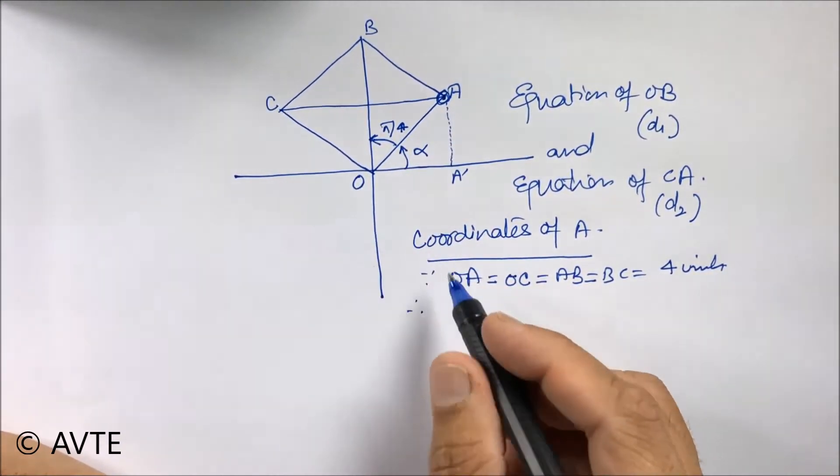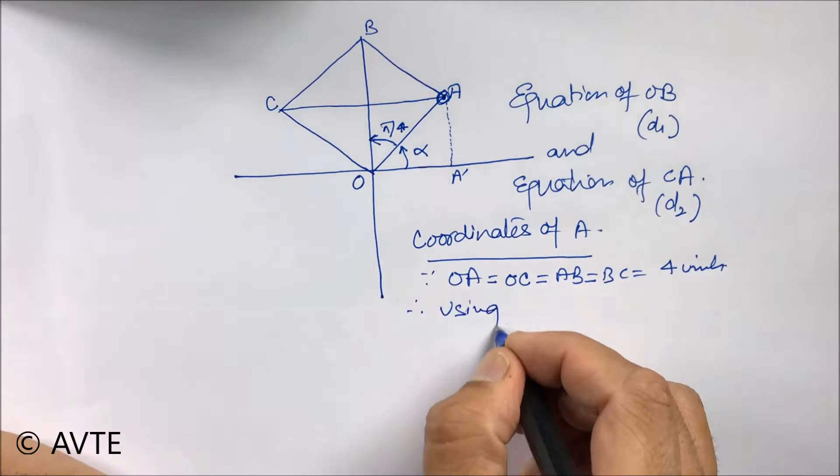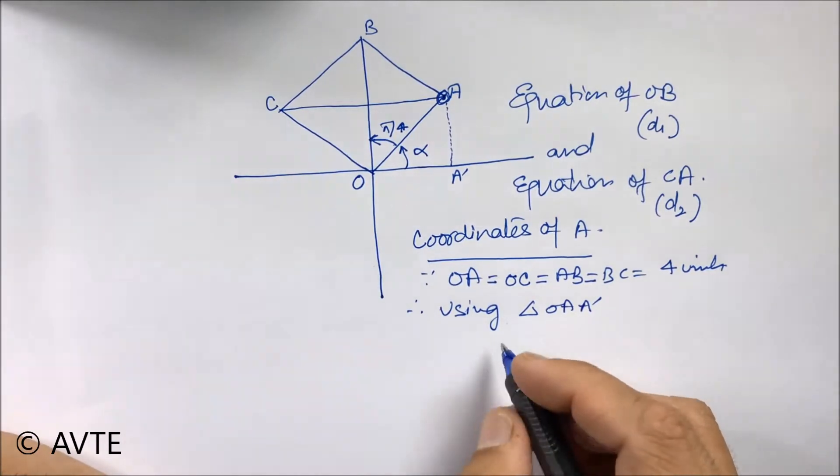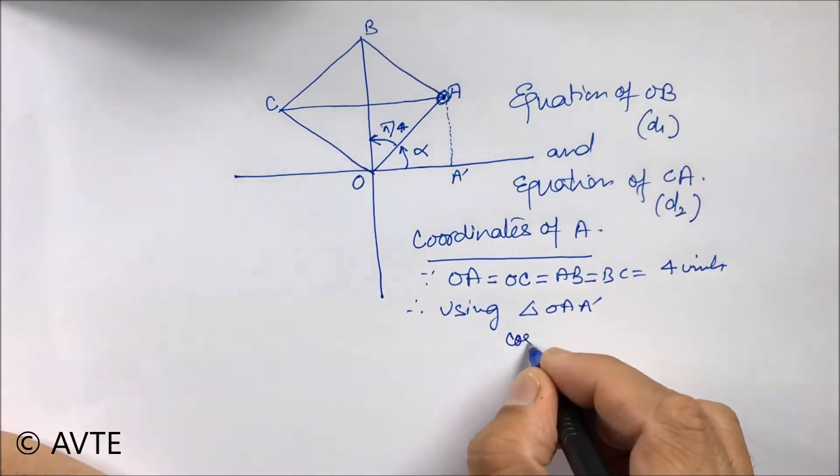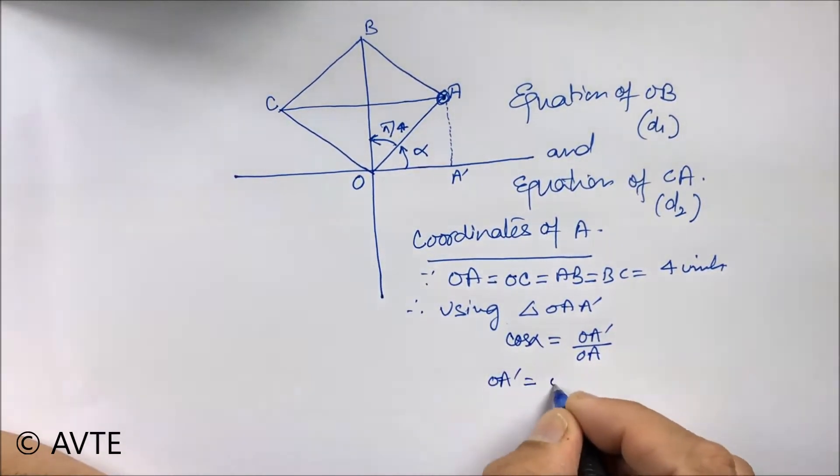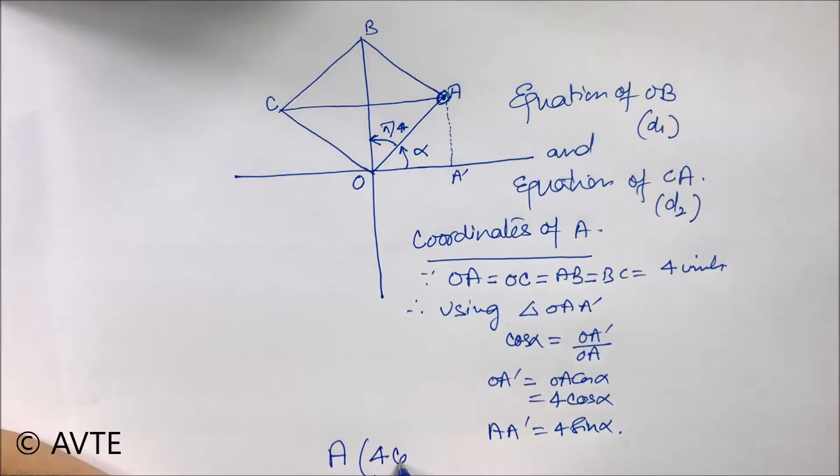Therefore please be careful using the triangle OA A dash, I can find cos alpha which is OA dash by OA, and OA dash is OA cos alpha which is four cos alpha. Similarly we can find A A dash and A A dash will be four sine alpha.